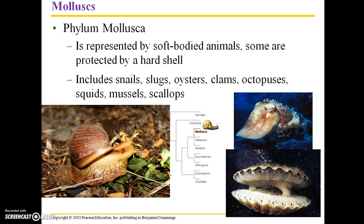Moving on to phylum Mollusca, these are represented by soft-bodied animals, some of which are protected by a hard shell such as snails. This group also includes slugs, oysters, clams, octopuses, squids, mussels, and scallops. It's interesting to note that octopuses and squids are highly intelligent animals.